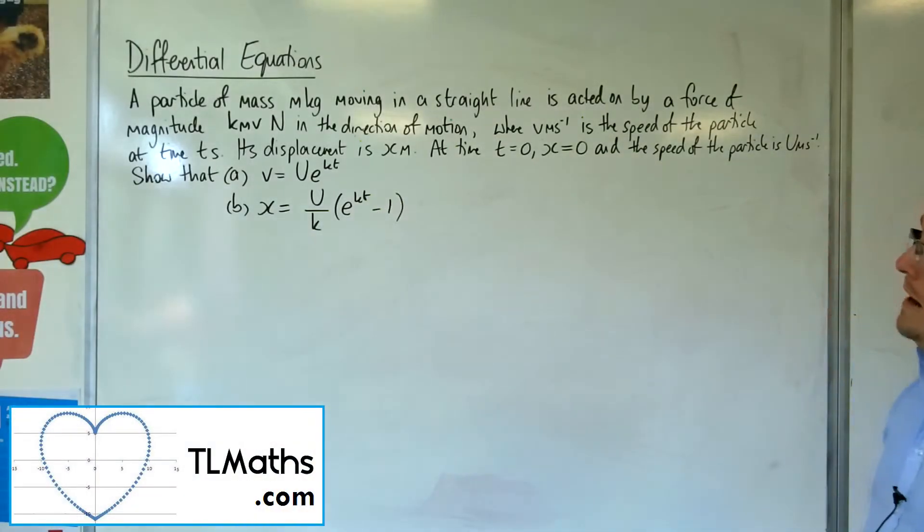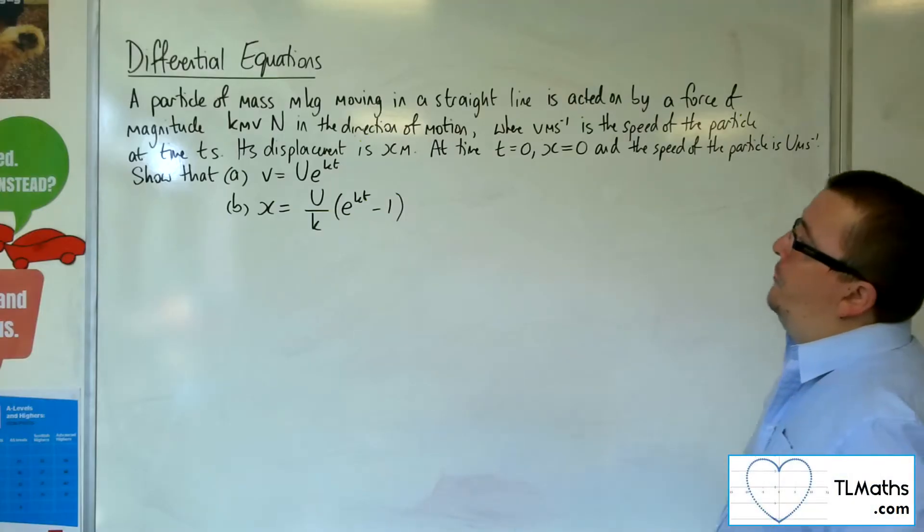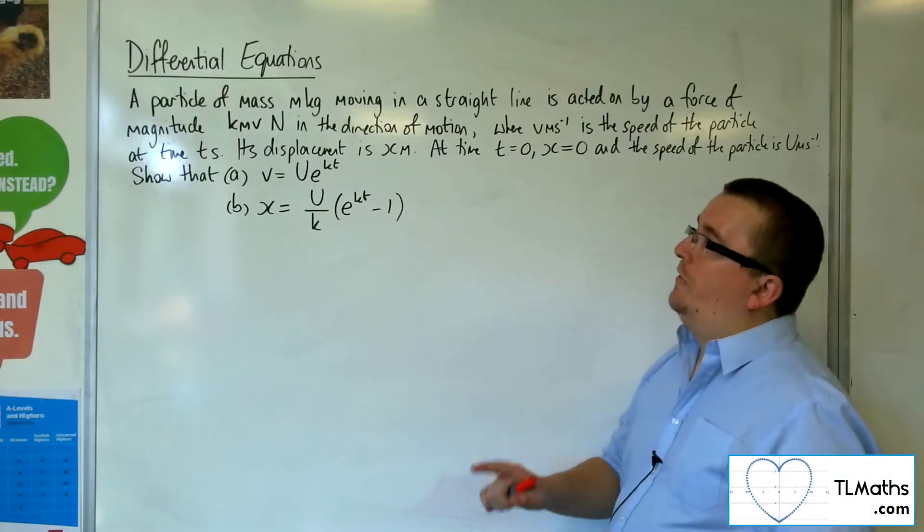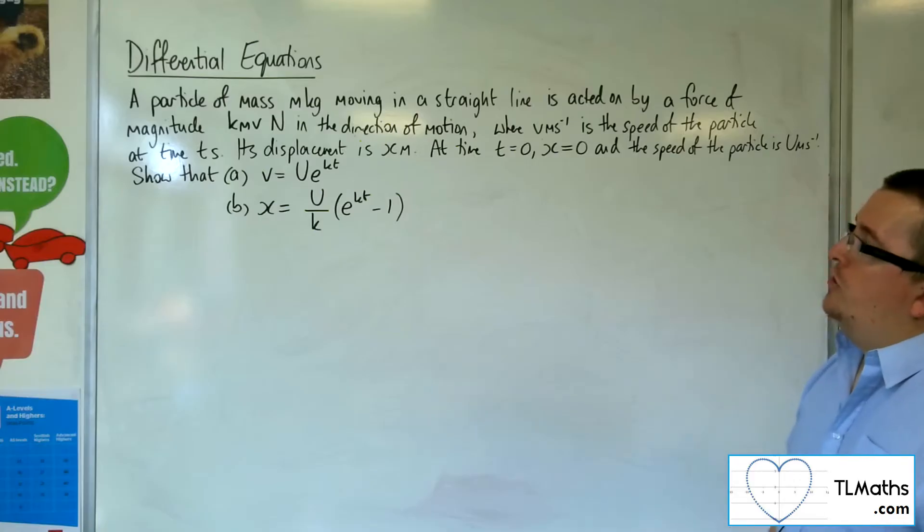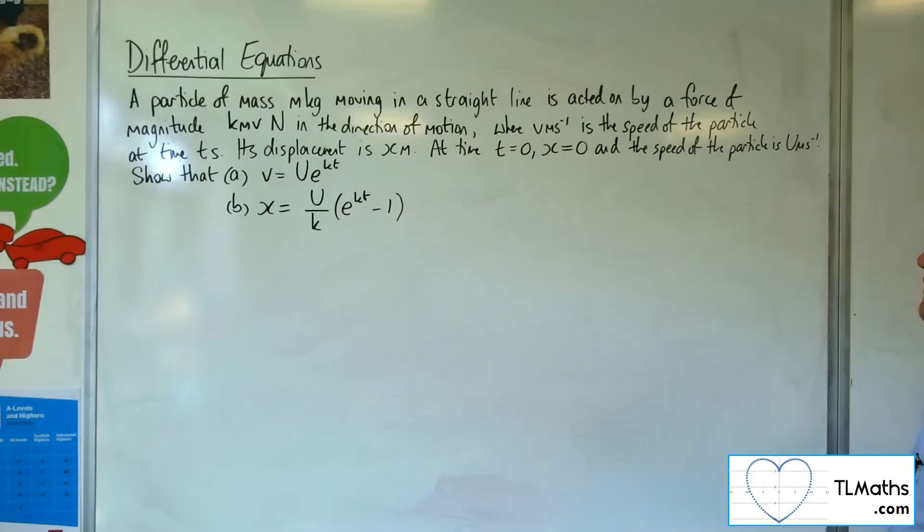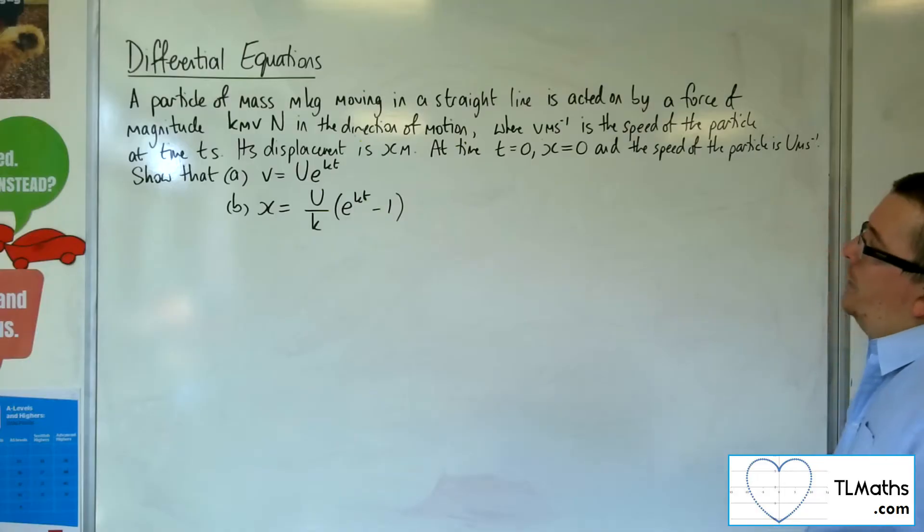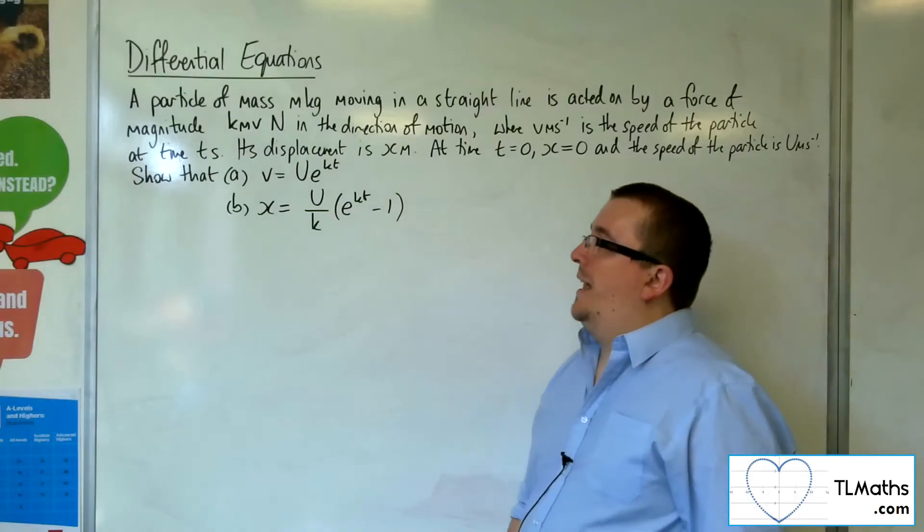In this video we've got a particle of mass m kilograms moving in a straight line, acted on by a force of magnitude kmv newtons in the direction of motion, where v meters per second is the speed of the particle at time t seconds. k here is a constant. Its displacement is x meters. At time t equals zero, x is zero,